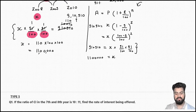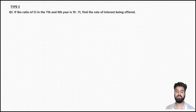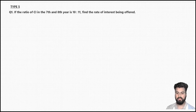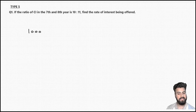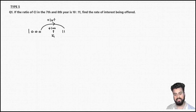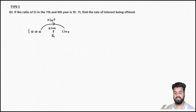If you have understood this, I want to discuss one more type — Type 5. If the ratio of CI in the 7th and 8th year is 10:11, find the rate of interest being offered. Before discussing the solution, let me recall one concept we already know. Taking hypothetical numbers: principal is 1000, rate is 10% per annum. At 10% I get interest of 10% of 1000, which is Rs. 100, making the amount at the end of year one equal to 1100.